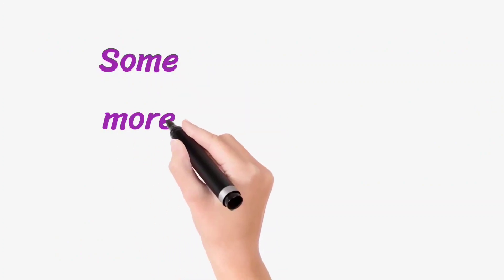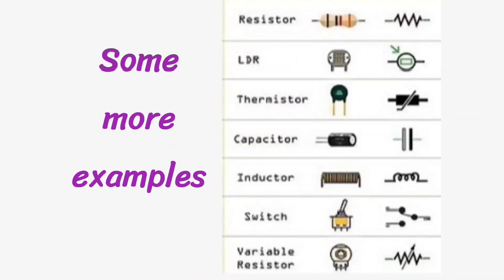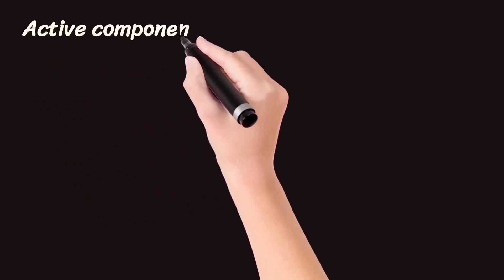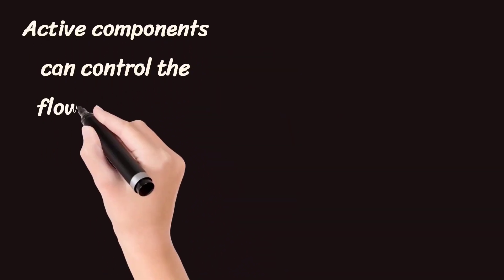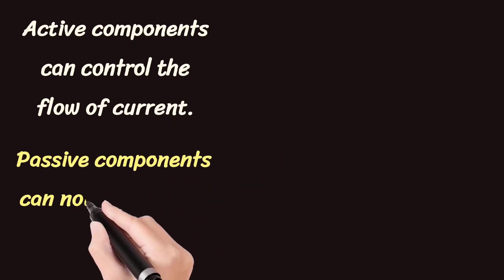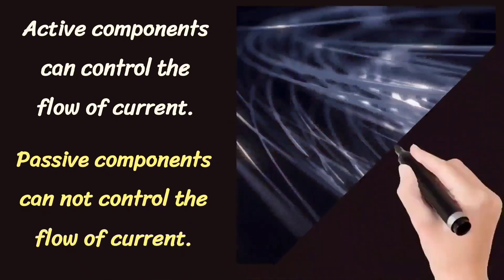More examples of passive devices include resistors, LDR, thermistors, capacitors, inductors, and switches such as pressure switch, limit switch, level switch, and variable resistor. Active components can control the flow of current, but passive components cannot control the flow of current — this is also a main difference between them.